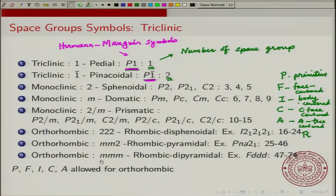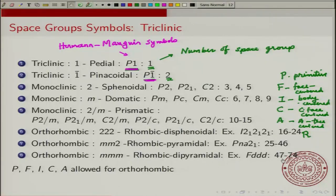For the rhombic dipyramidal class with MMM symmetry, an example is a face-centered FDD case, where each of the mirrors is a diamond glide. The total number of space groups in this class goes all the way from 47 to 74 — a total of 28 space groups.